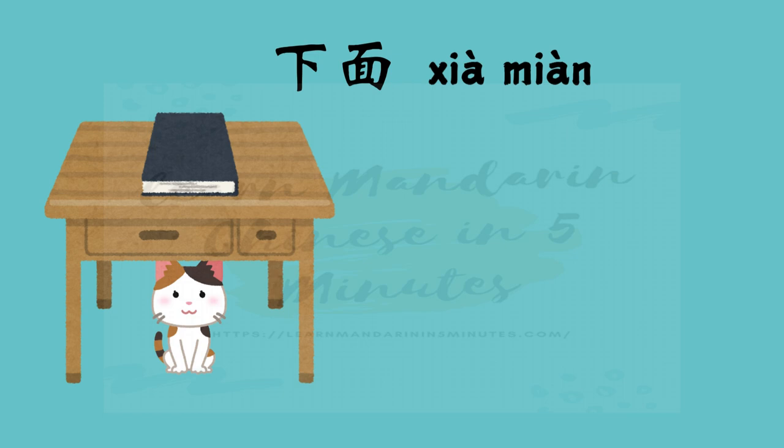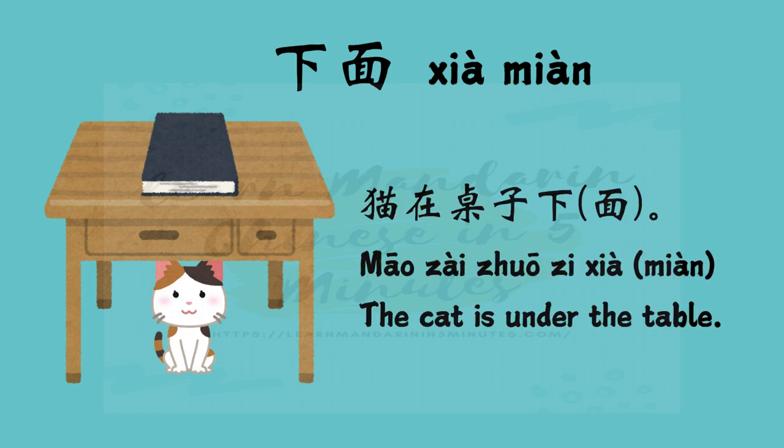下 can also be used to indicate location. For example, 下面 or just 下. Sentence example: 猫在桌子下, or 猫在桌子下面 — the cat is under the table.